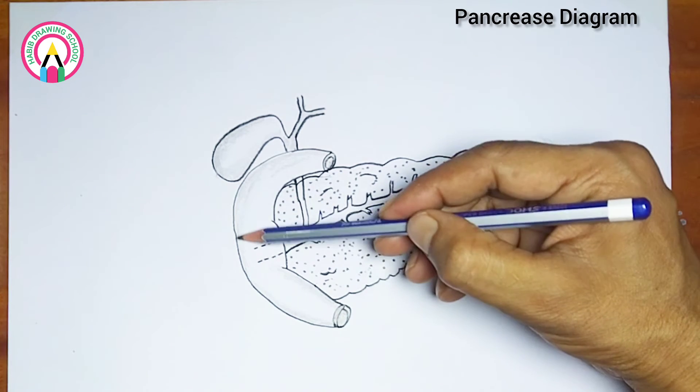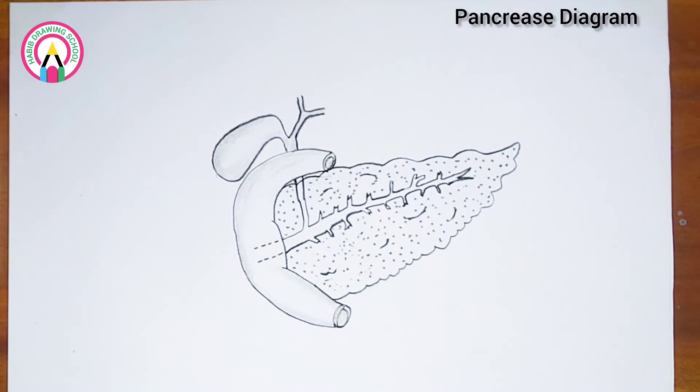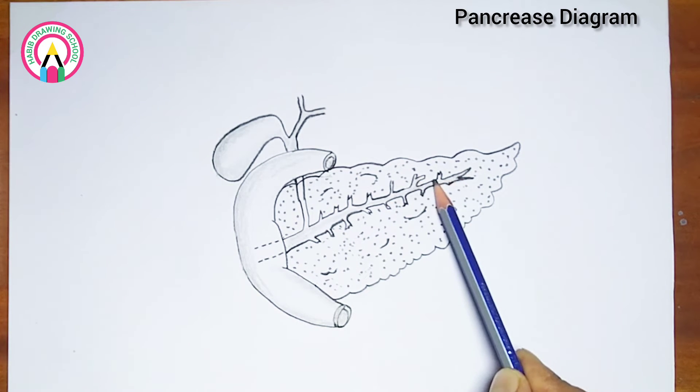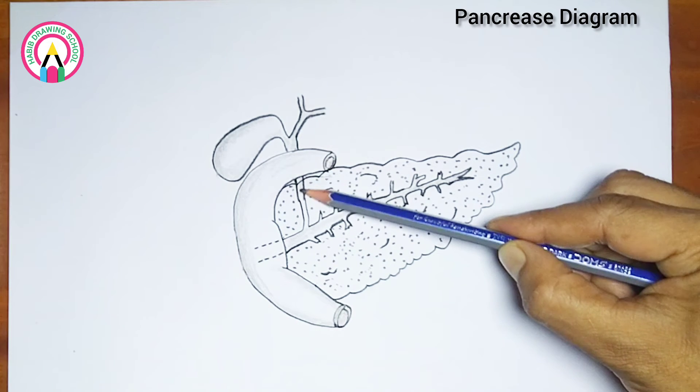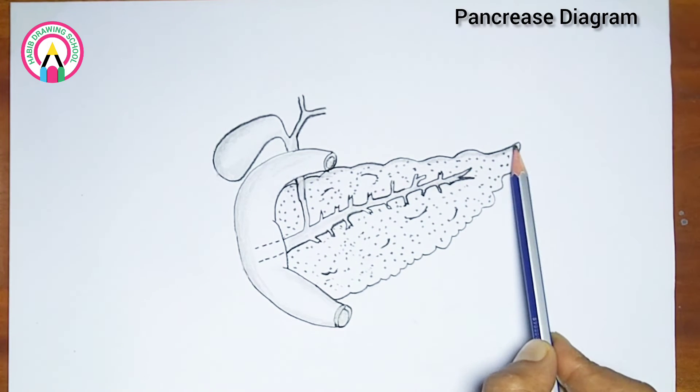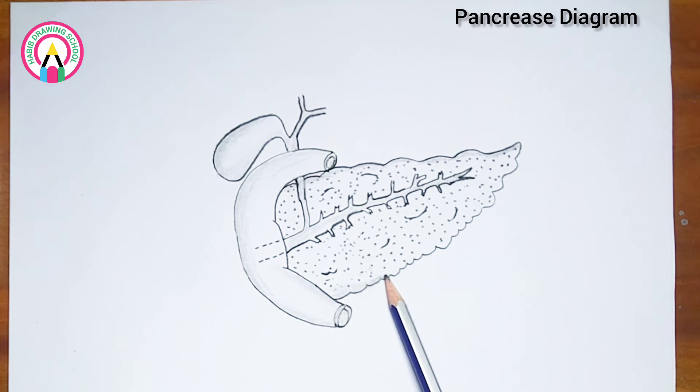These hormones include insulin, glucagon, somatostatin, and pancreatic polypeptide. These hormones play crucial roles in regulating various metabolic processes in the body.